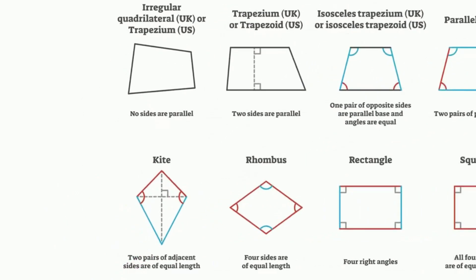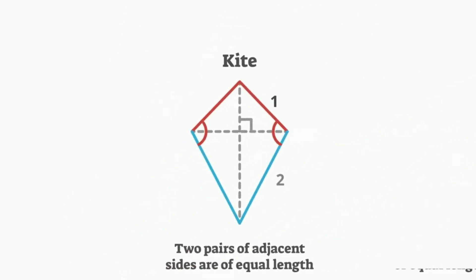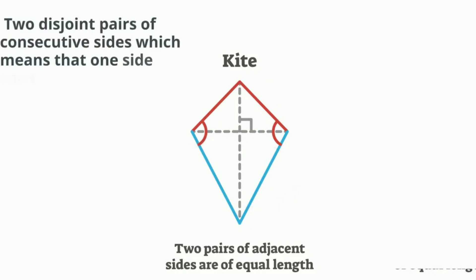A kite has four sides, therefore it is a quadrilateral. One of the first things you may notice is that there are two pairs of different length sides. A fancy word to describe this is that a kite has two disjoint pairs of consecutive sides.